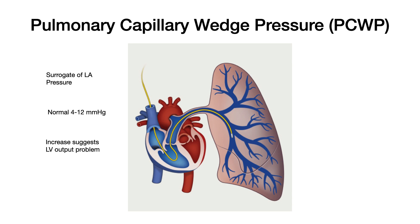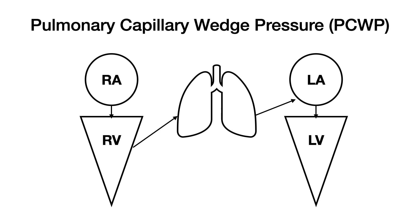Normally, PCWP should be between about 4 and 12 — don't worry about the values, as step 1 or level 1 exams will provide normal ranges. If there is an increase in pulmonary capillary wedge pressure, this suggests a problem with left ventricular output, because if blood were being ejected normally, this pressure wouldn't be elevated. When you have left-sided heart failure and blood backs up, it puts distal resistance on the pulmonary vasculature, and the pulmonary capillary wedge pressure increases.